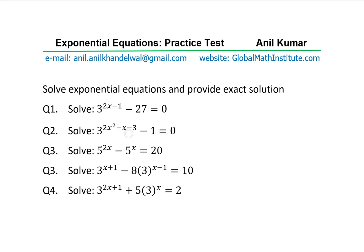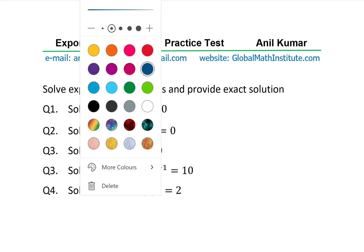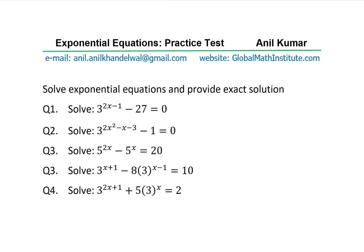The exponent is a quadratic equation, and when equated to 0 it can be solved. The next equation is: solve 5 to the power of 2x minus 5 to the power of x equals 20. This can be solved using quadratic equations — you substitute 5 to the power of x as some variable and solve as a quadratic. The next two questions are a bit tricky, so think over them and then provide solutions.